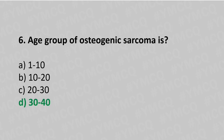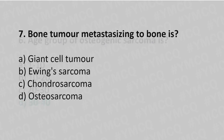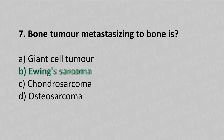Question number seven: bone tumor metastasizing to bone is option A giant cell tumor, option B Ewing sarcoma, option C chondrosarcoma, option D osteosarcoma. The answer is option B, Ewing sarcoma.